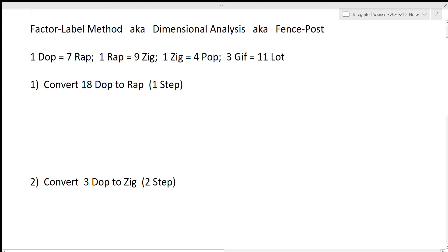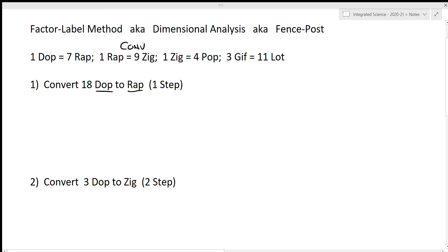I want you to follow along with your notes and copy down these example problems — they're going to be a good resource to refer back to as you're doing problems in WebAssign. Example number one is a one-step problem: a simple conversion from a unit called a dot to a unit called a wrap. Anytime you're converting units you need a way to translate between them — we call that a conversion factor. All of these up here are conversion factors.